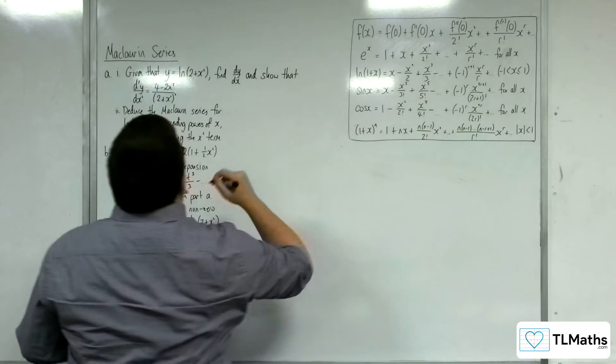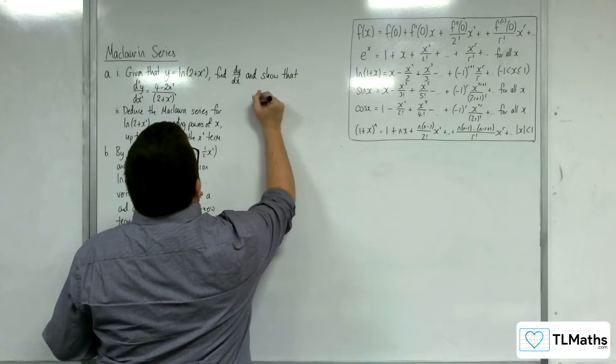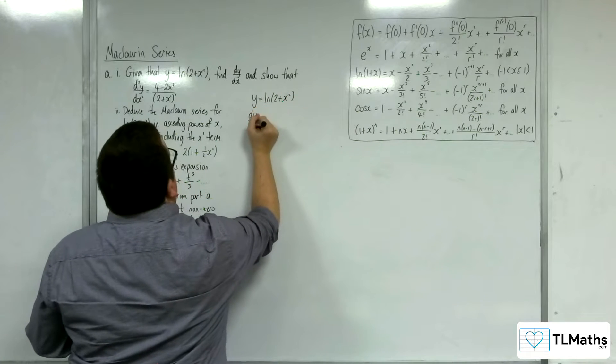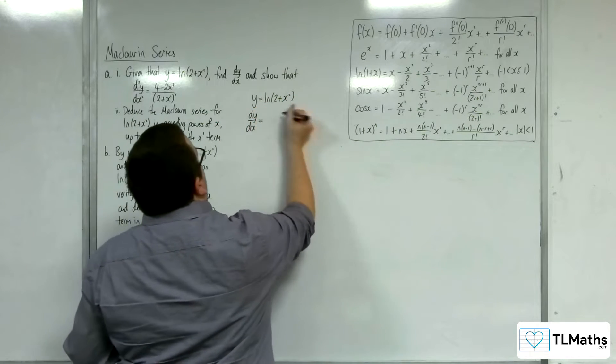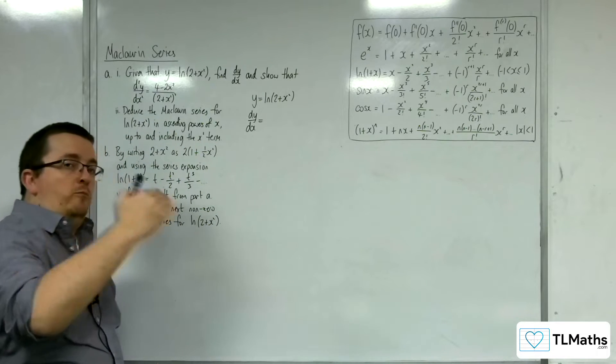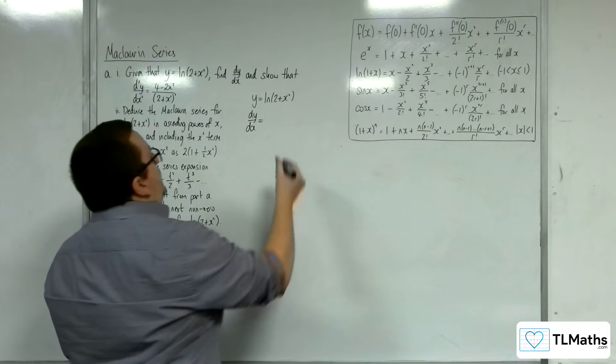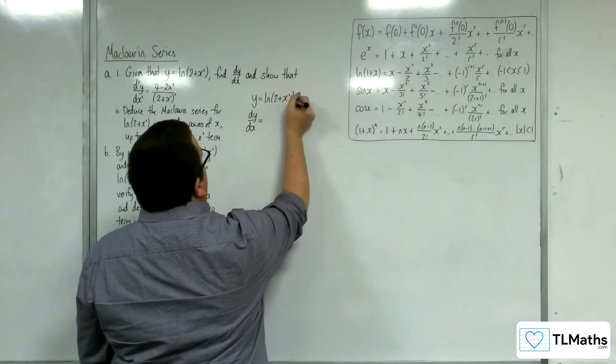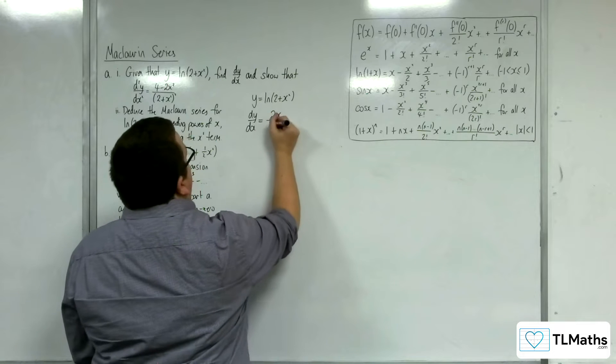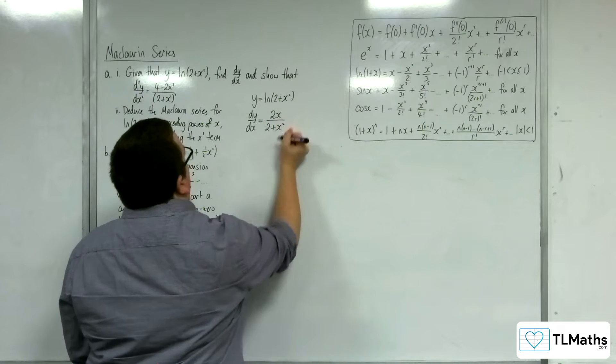Okay, so the first thing to do here, y equals log of 2 plus x squared. So to differentiate this, we know log of a function differentiates to f prime over f. So we're going to have the derivative of 2 plus x squared in the numerator, which is 2x, and the denominator will have 2 plus x squared.